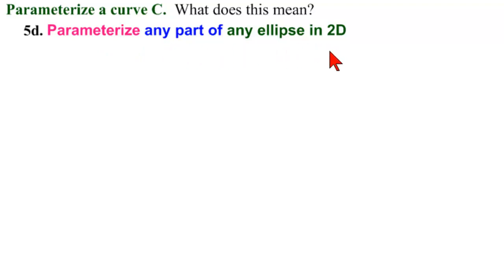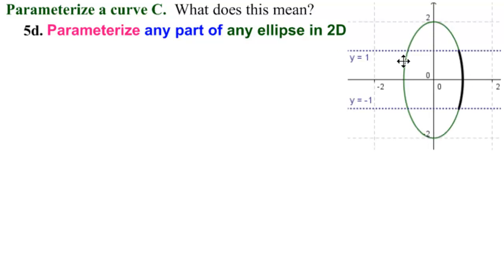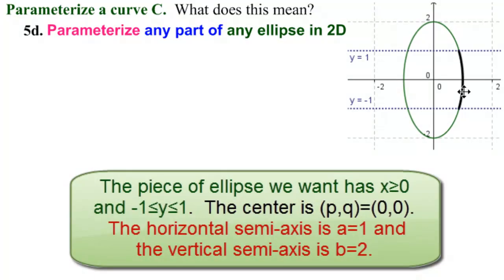This is actually the first place that we're going to see where we need to be very careful with parameterization. Here we have an ellipse, and what we want to do is parameterize this piece of the ellipse. We can see that we are looking at the positive x part of the plane, and between y equals minus 1 and y equals 1.